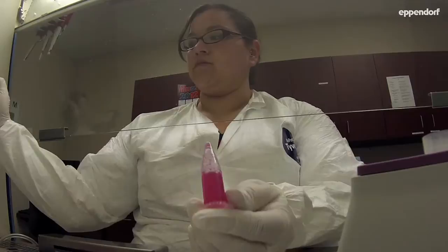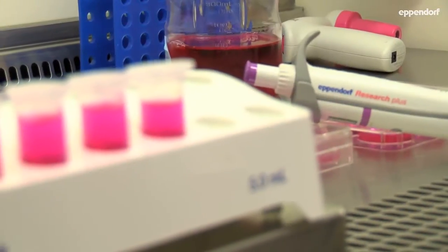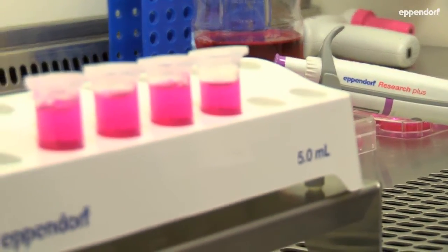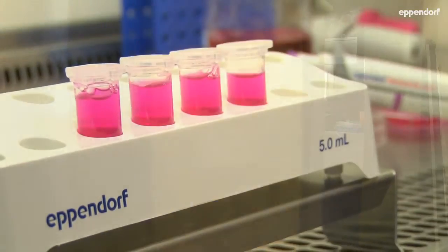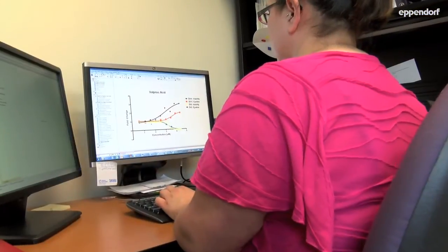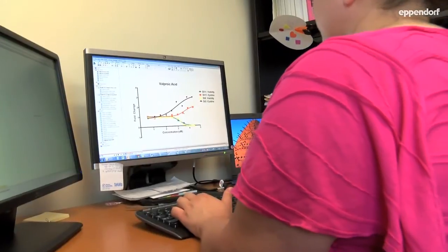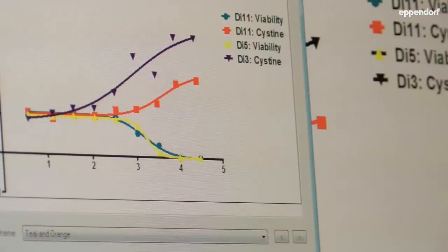One of the hallmarks of every Eppendorf consumable is that we don't use slip agents, plasticizers and biocides, which are chemicals which are sometimes used in manufacturing and can leak out and affect bioassay results. We don't use these in our manufacturing process.